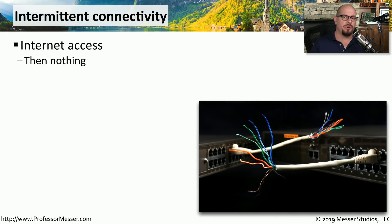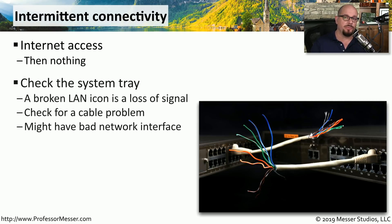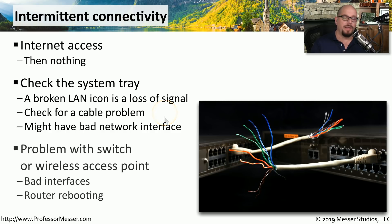Another challenging network issue is when the network is working fine and then suddenly stops, then perhaps comes back — this intermittent access can be difficult to troubleshoot. Check the system tray icon for connectivity. If there's a broken LAN icon, you have a loss of signal and should check your cabling. If the cable checks out, look at the network interface card in your computer. If both are fine, check the infrastructure equipment such as switches or wireless access points, which may be randomly rebooting and causing intermittent connectivity.